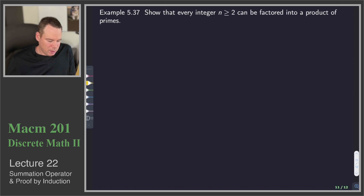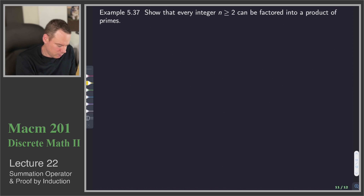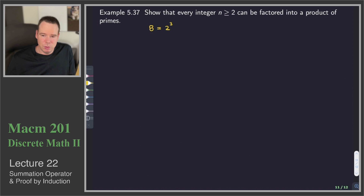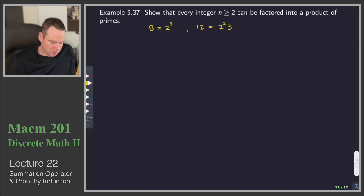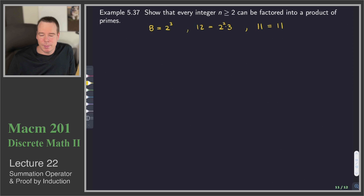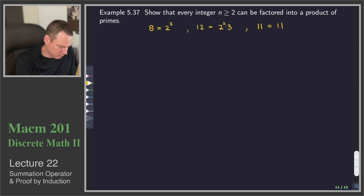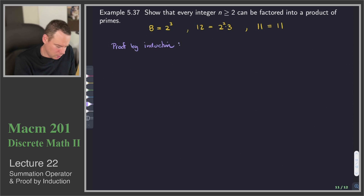Here's another example of induction. Let's show that every integer n greater than or equal to 2 can be factored into a product of primes. For example, 8 equals 2 times 2 times 2, which is a product of primes. 12 equals 2 squared times 3. And 11 is itself prime — a product of just one prime. We'll use induction to prove this.